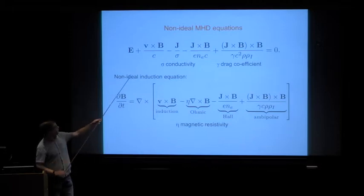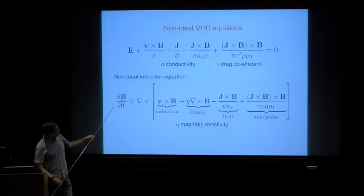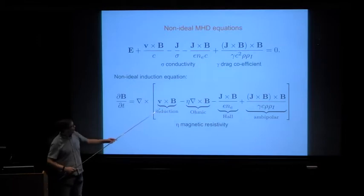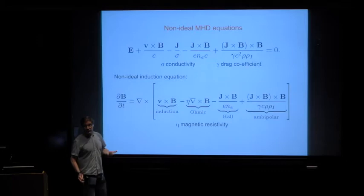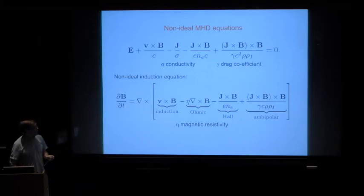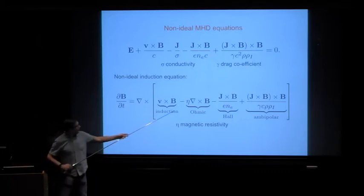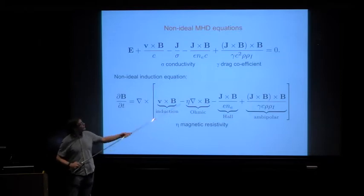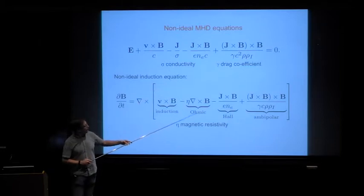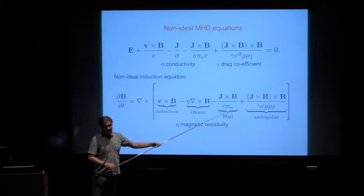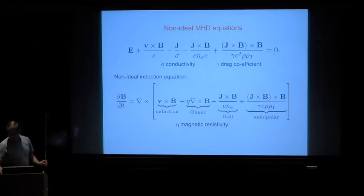When we've got that, we can go back to Faraday's law and straight away get the non-ideal induction equation, which takes this form. In ideal MHD we just have the first piece, but now we have three extra terms on the right-hand side: eta is the magnetic resistivity, inversely proportional to the conductivity — that's ohmic; then the Hall term; and then the ambipolar term. That's the non-ideal induction equation. Hopefully you've got some sense of how we derived it, even though we didn't go through the messy details.